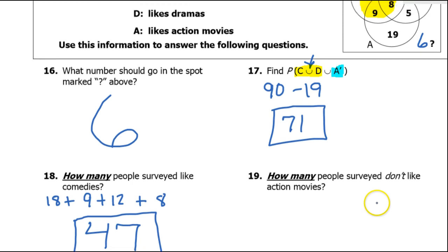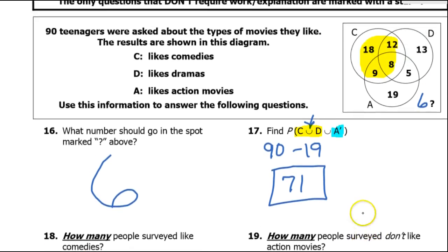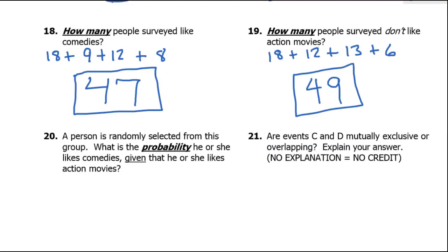How many people surveyed don't like action movies? The people who don't like action movies, that's everything outside of action movies. So the 18, the 12, the 13, and the 6. These are the people that don't like action movies. So that turns out to be 49.